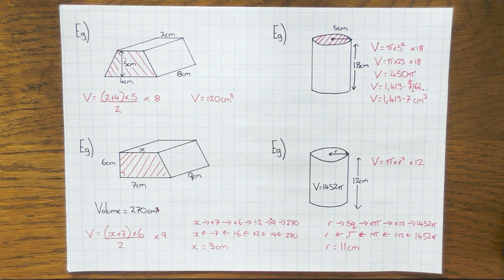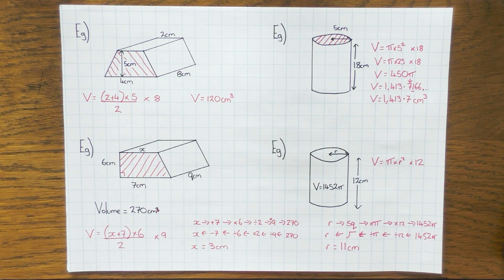Hopefully that helps with volume of prisms. Just remember that formula: area of the cross section times by the length. And if you need to find a missing length, just substitute everything into the formula and use your flowchart to go backwards. Thanks for watching.